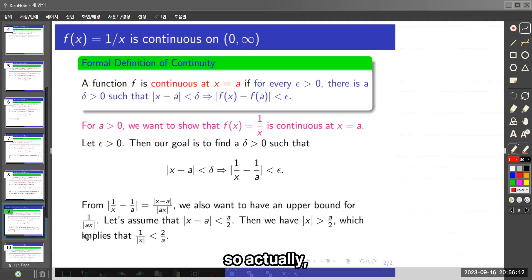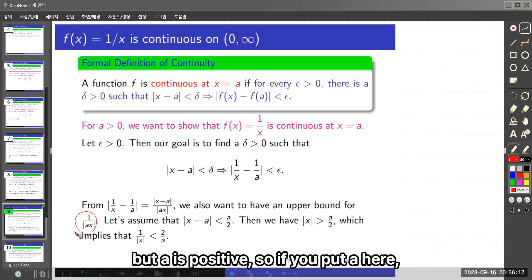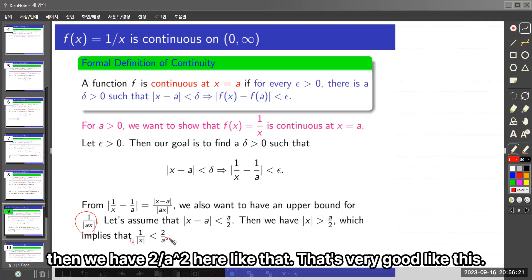Actually, we want to have an upper bound for 1 over absolute value ax, but a is positive. So if you put a in here, then we have 2 over a² in here like that. That's very good.